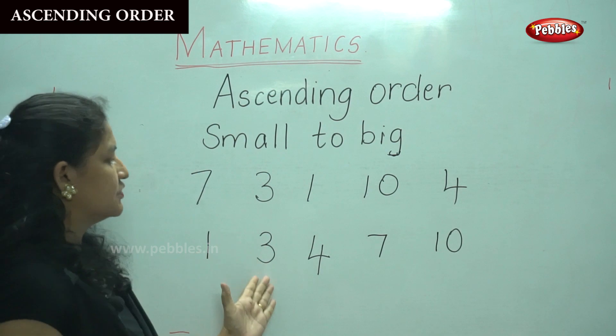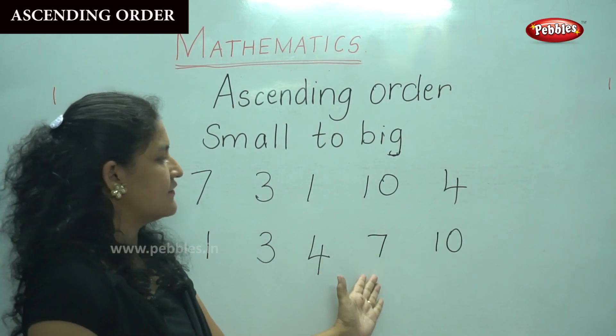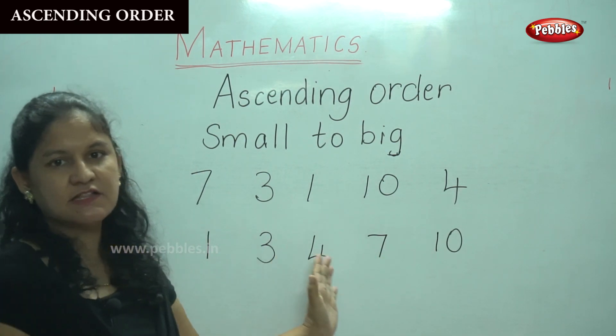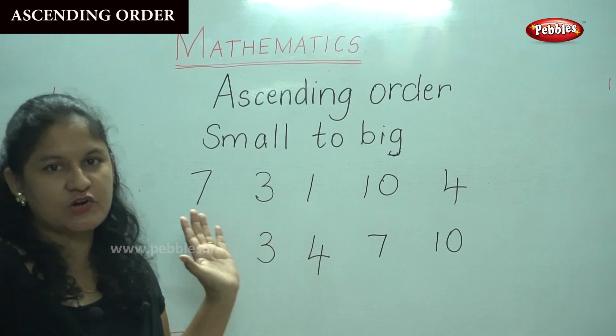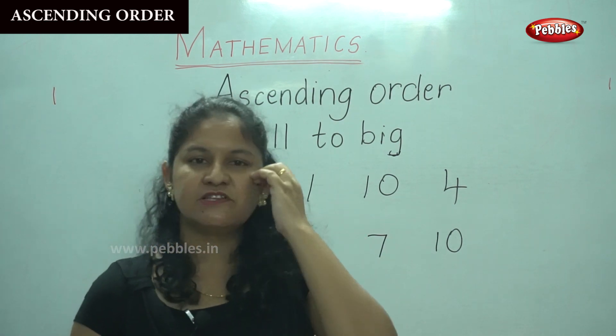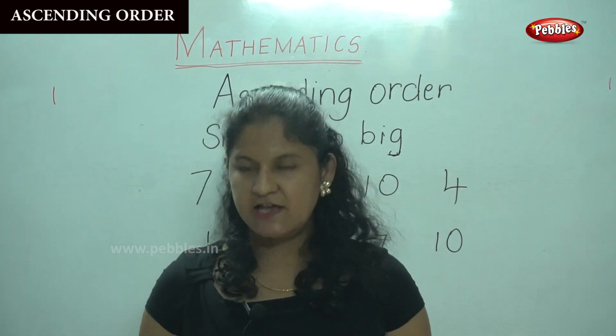So: 1, 3, 4, 7, 10. These are the ascending order of numbers. Now we are going to place more numbers in ascending order.